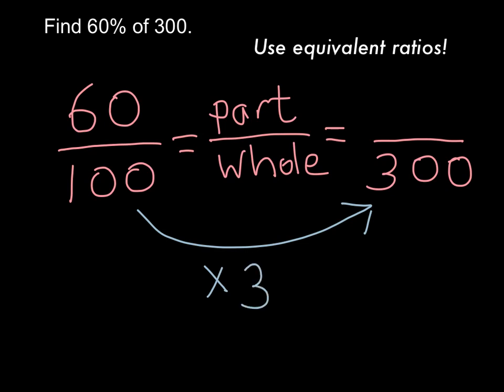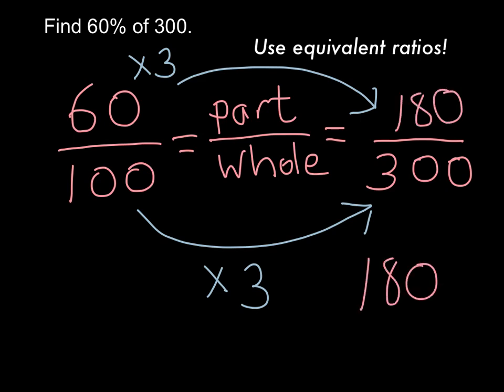That's multiplying by 3. So the same thing has to happen up there, and that's pretty easy to figure out as well. That's 180. So that's my answer. 180 is 60% of 300.